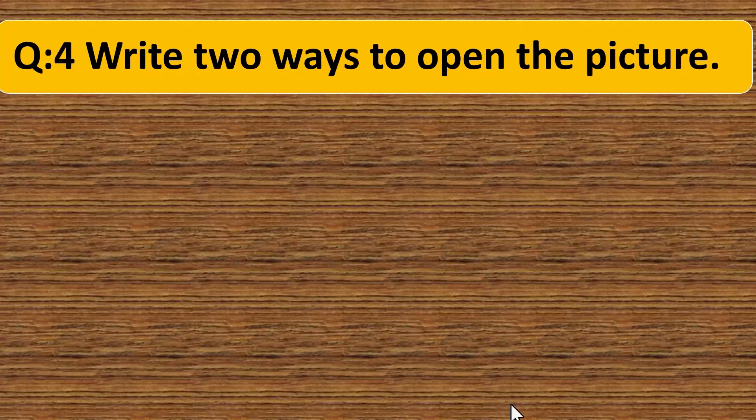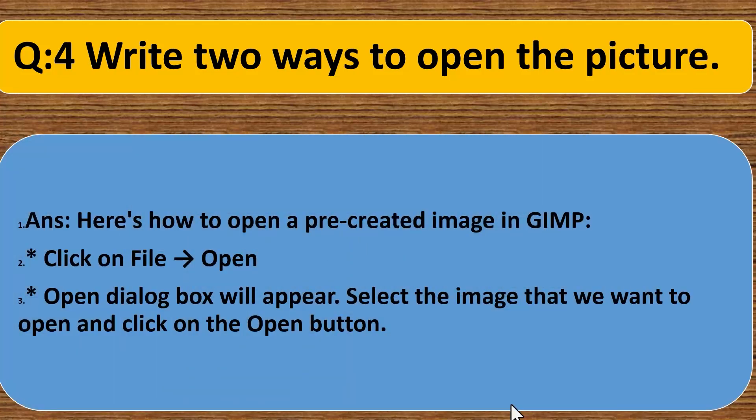Question fourth. Write two ways to open the picture. Here is how to open a pre-created image in GIMP. Click on file, open. Open dialog box will appear. Select the image that we want to open and click on the open button.